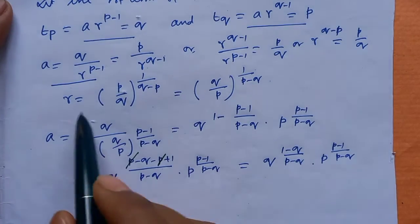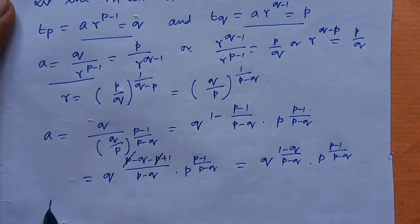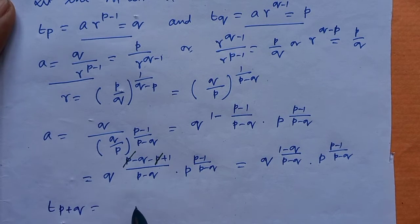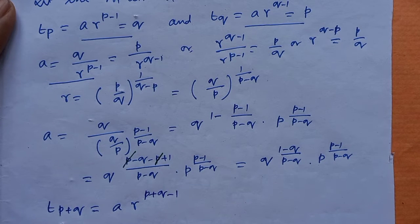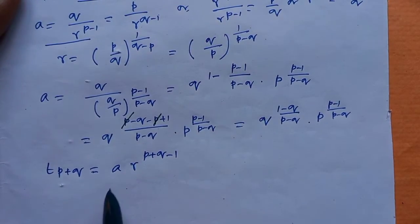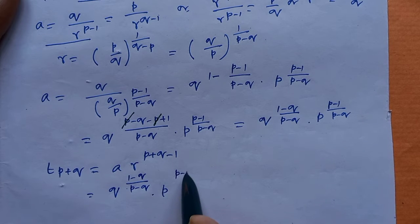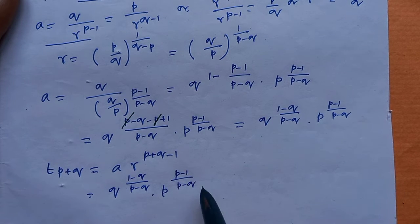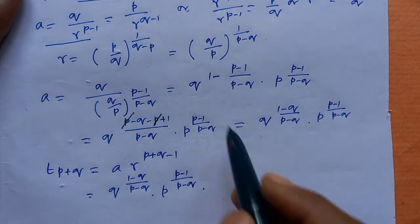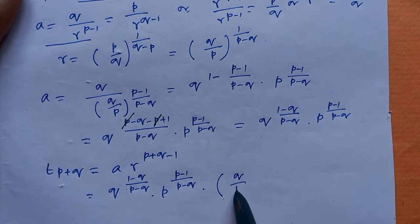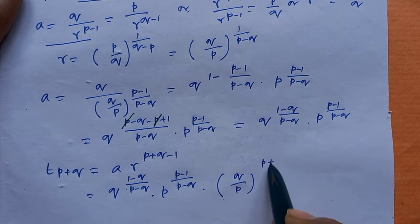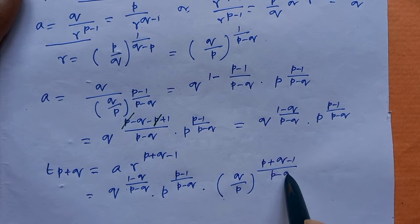Now, having found the values of r and a, the (p+q)th term equals a times r to the power (p+q minus 1). Substituting the value of a and r equals (q by p) to the power (p+q minus 1) by (p minus q).